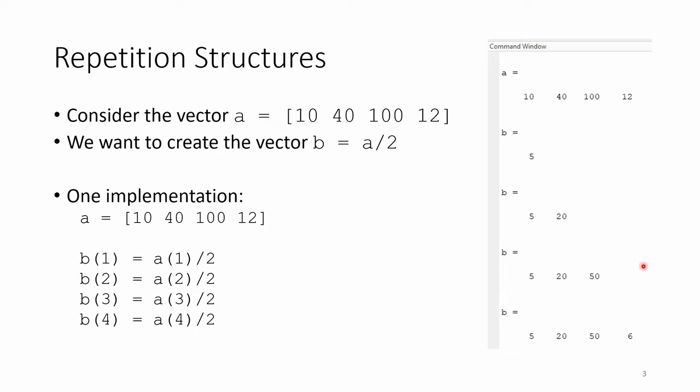Clearly, our method worked. The elements of our b vector are indeed the corresponding elements of the a vector cut in half. But we had to manually type out every element of the b vector, which is a pain even for this very simple example. In fact, I copied and pasted the first line to make the other three lines. What if our a vector was a million elements long instead of four? We obviously couldn't copy and paste this a million times, so we need to rely on repetition structures to help us. For and while loops are essentially the programming equivalent of copy and paste.